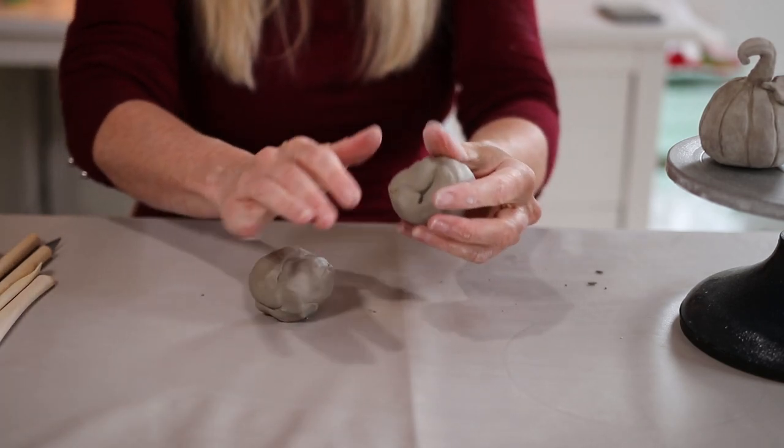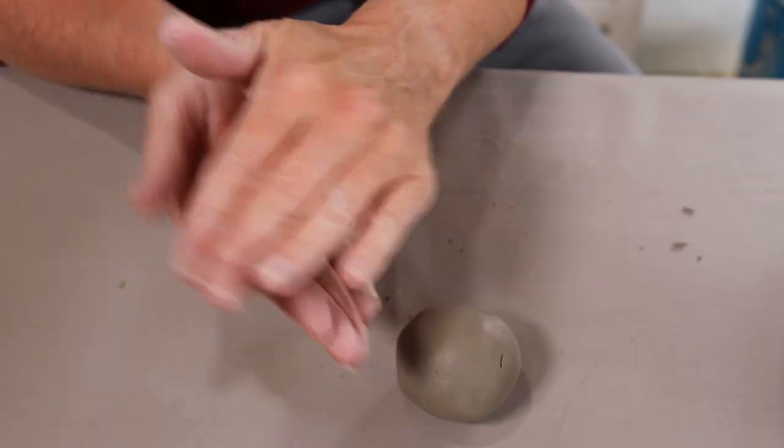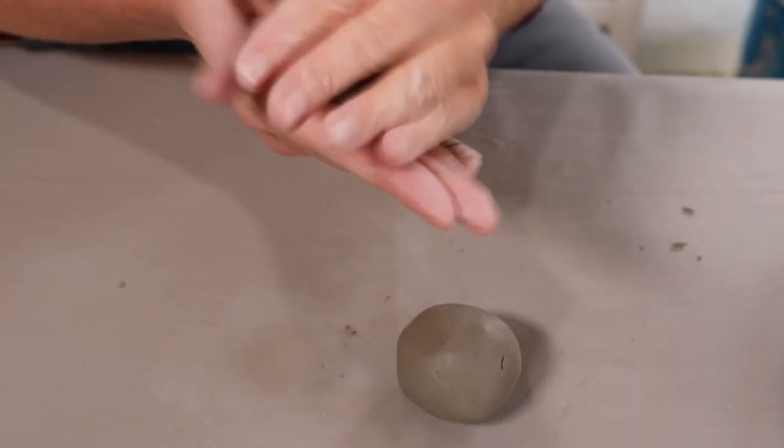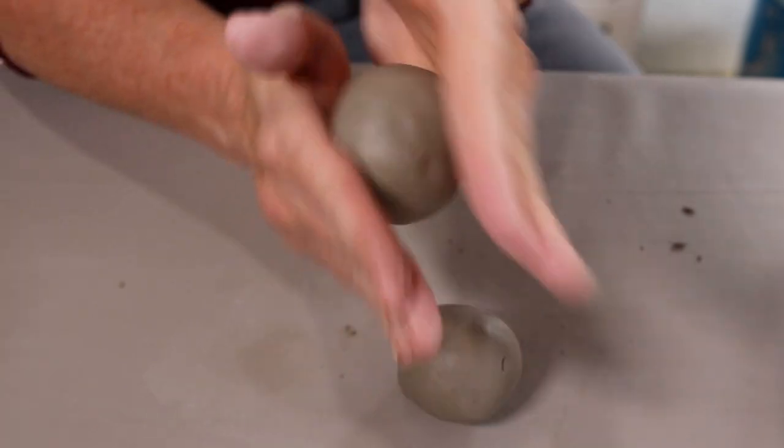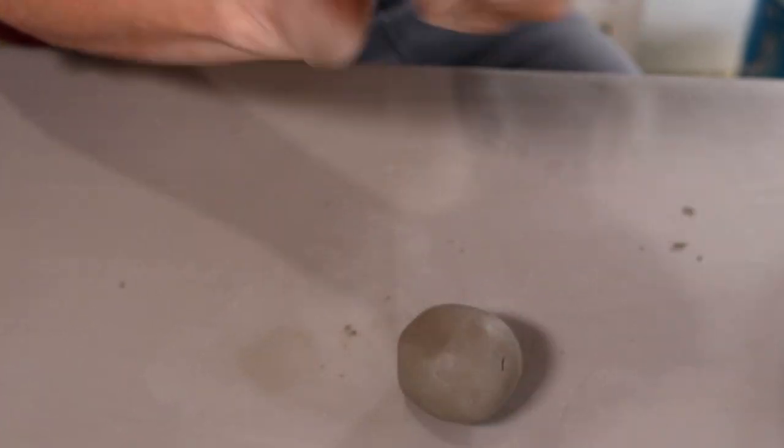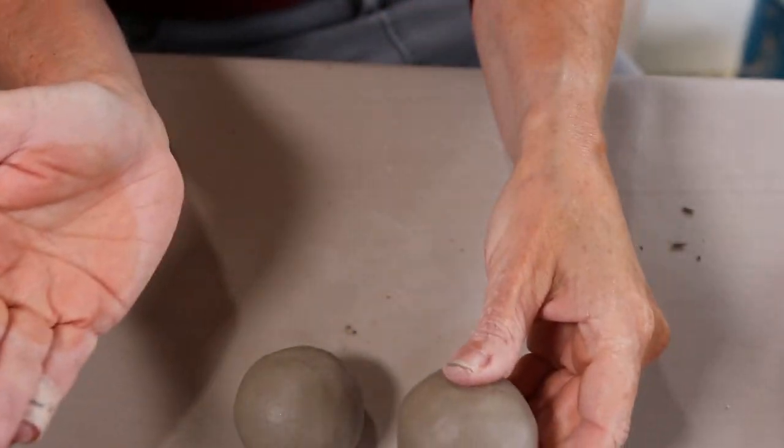And what we're going to do is we're going to roll these into balls and we're going to make two pinch pots. So you want a nice firm ball. What you need to do is just roll your hands, roll the palm of your hands together. You can do the same with the other one.